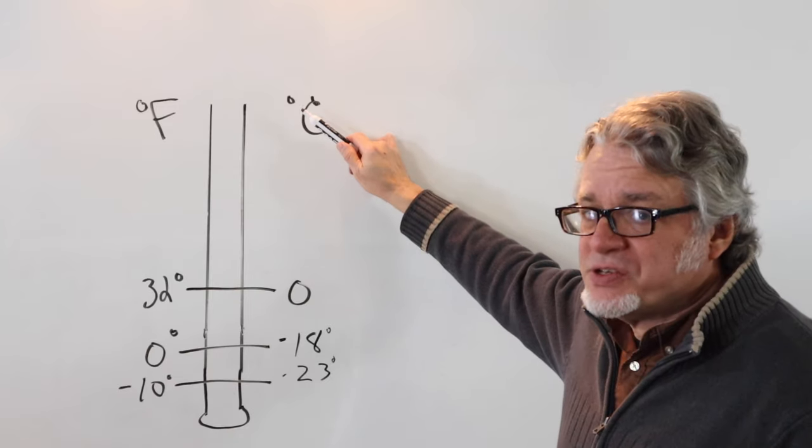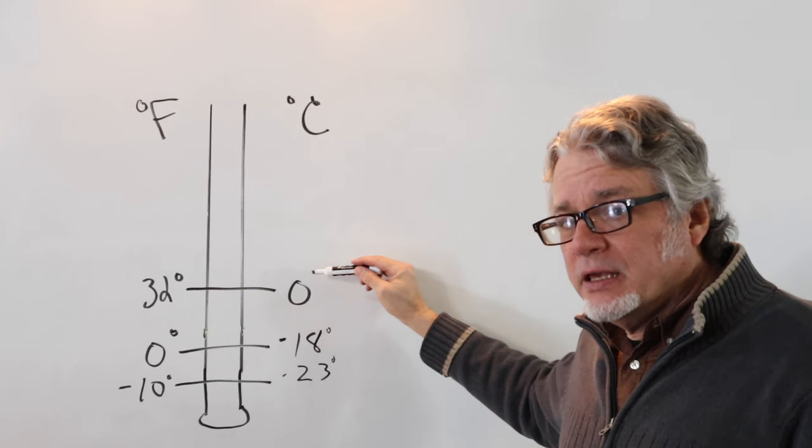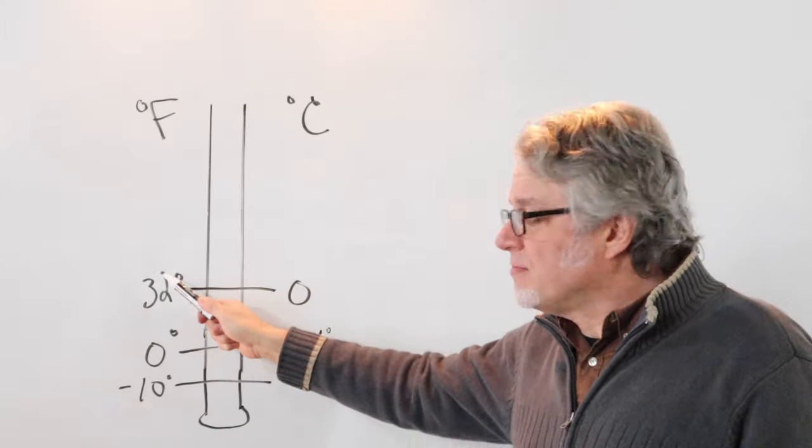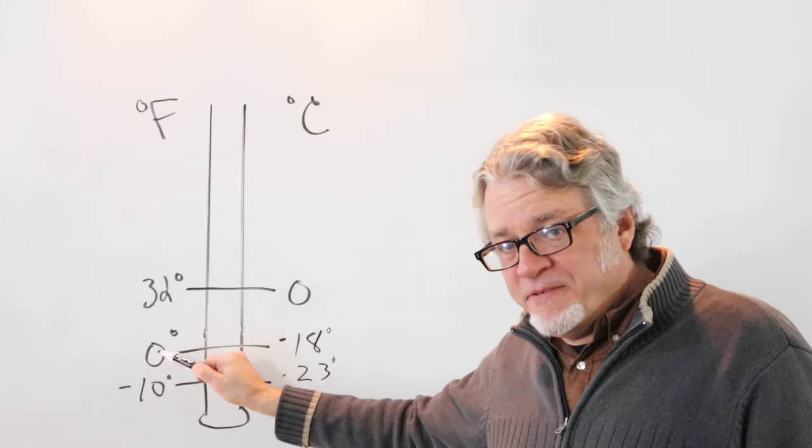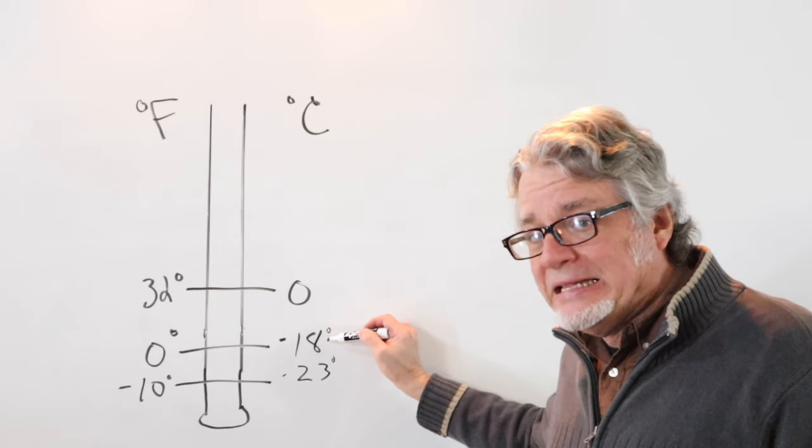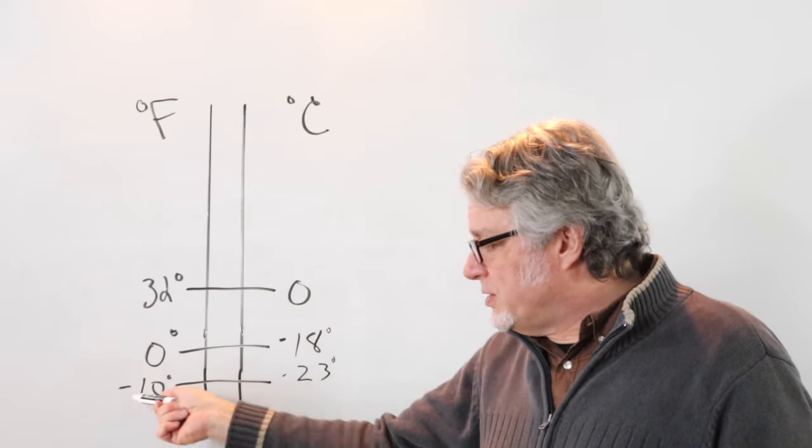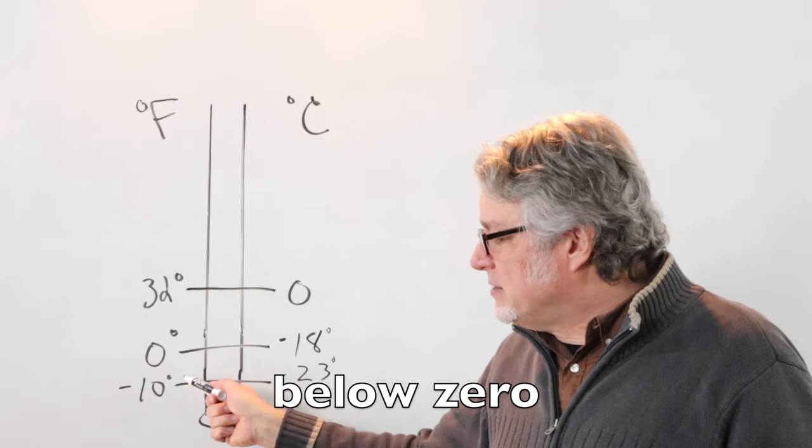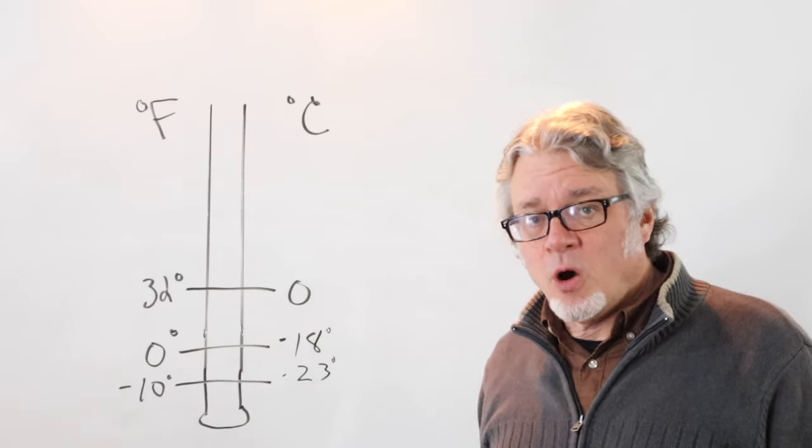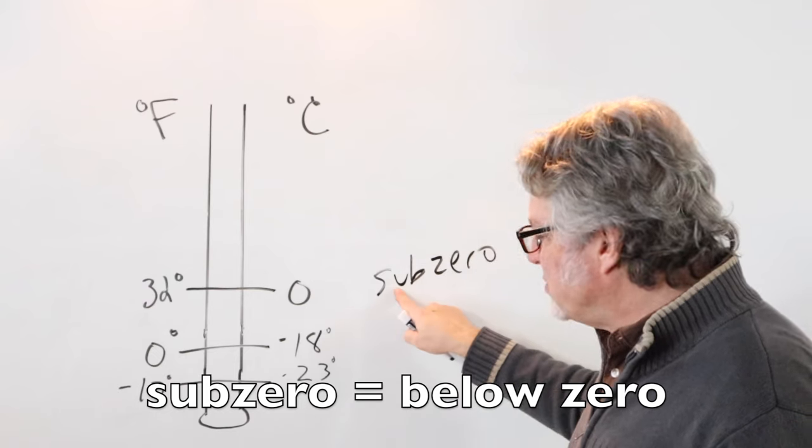Here's Fahrenheit and here's Celsius. Zero on the Celsius scale is when water freezes. On the Fahrenheit scale, that's thirty-two degrees. When you reach zero on the Fahrenheit scale, that's very cold. It's equivalent to eighteen degrees below zero Celsius. And here is below zero. Negative ten degrees is ten degrees below zero. That's very cold. Sometimes we refer to this as sub-zero. That's below zero.